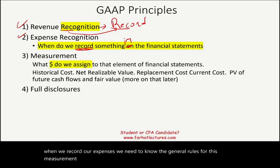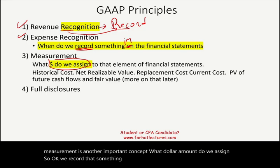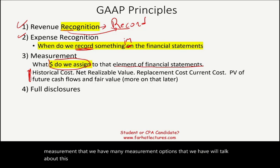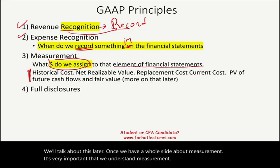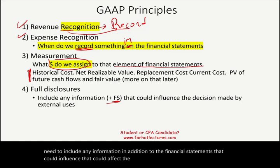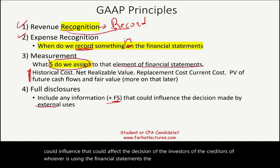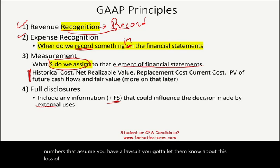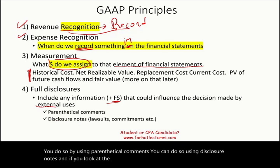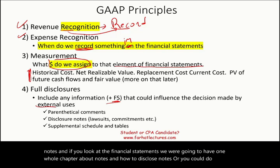Measurement is another important concept — what dollar amount do we assign to an element of the financial statements? We have many measurement options, which we'll discuss on a dedicated slide. The fourth principle is full disclosure: you need to include any information, in addition to the financial statements, that could influence the decision of investors, creditors, or other external users. It's not only the numbers — if you have a lawsuit or a commitment, you must disclose it. You can do so using parenthetical comments, disclosure notes, or supplemental schedules.